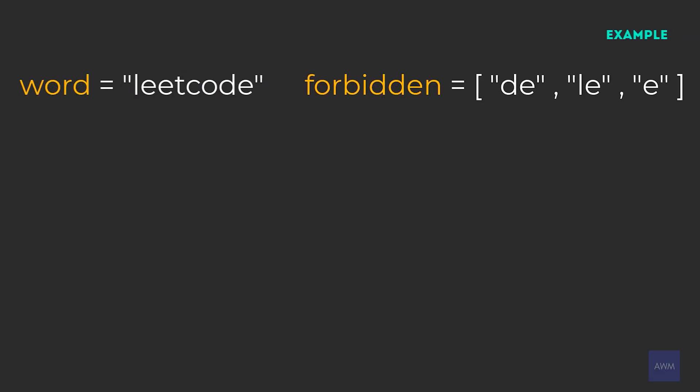So let's look at this example to make sure we understand what we need to do. We need to find the longest substring in word that has none of its substrings present in forbidden. I know that might sound confusing — the first time I read this problem, I was really confused. So let's first identify what all of the valid substrings are.